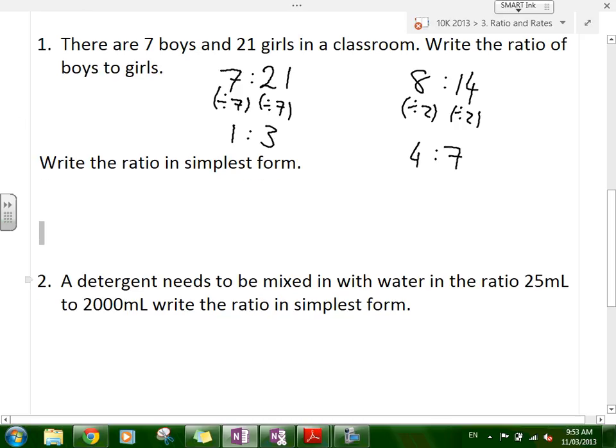Now, if we have a look at the next one. A detergent needs to be mixed in with water in the ratio of 25 mls to 2,000 mls. Write the ratio in simplest form. I should have specified here, write the ratio of detergent to water. Because it depends. If it's water to detergent, you put the quantity of the water first and then the detergent. Generally speaking, if the detergent is mentioned first and the water is mentioned second, then we should write it as 25 to 2,000. So let's write it like that. 25 to 2,000.